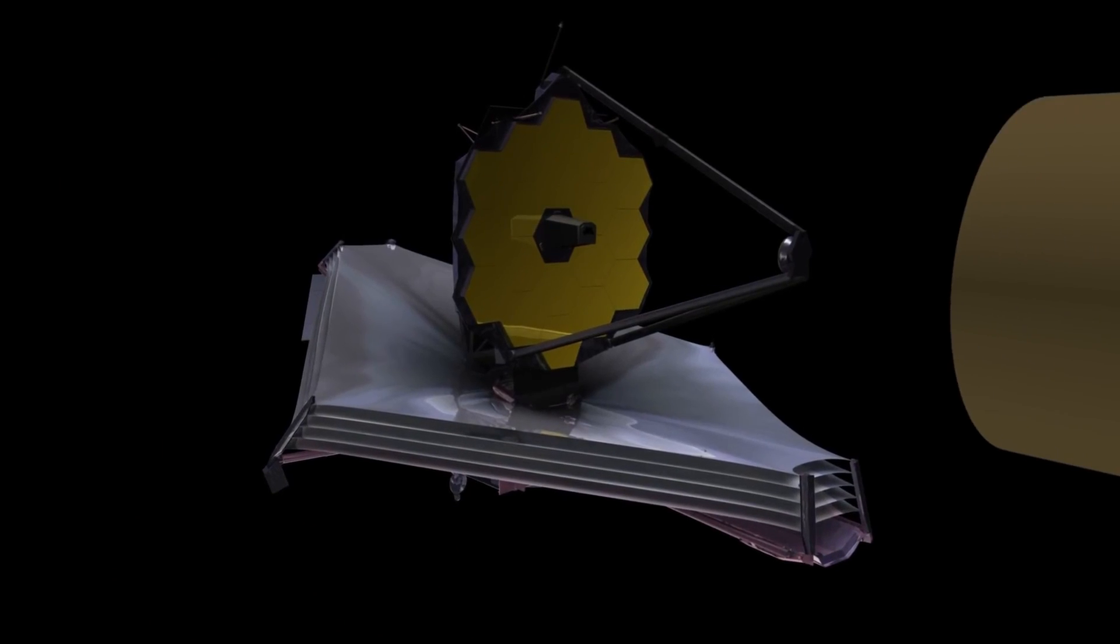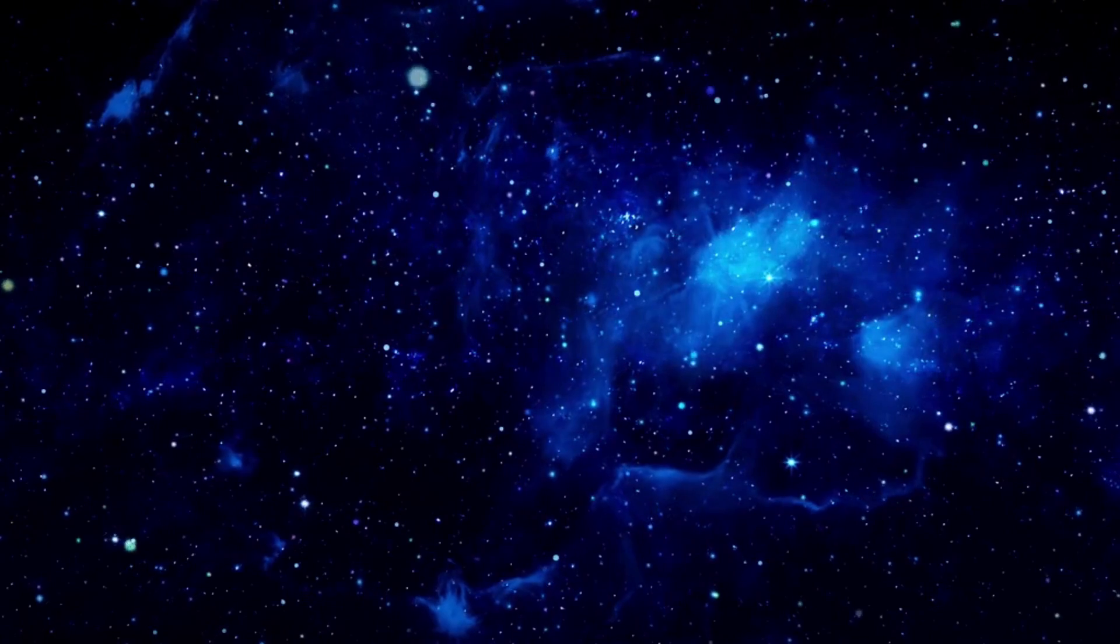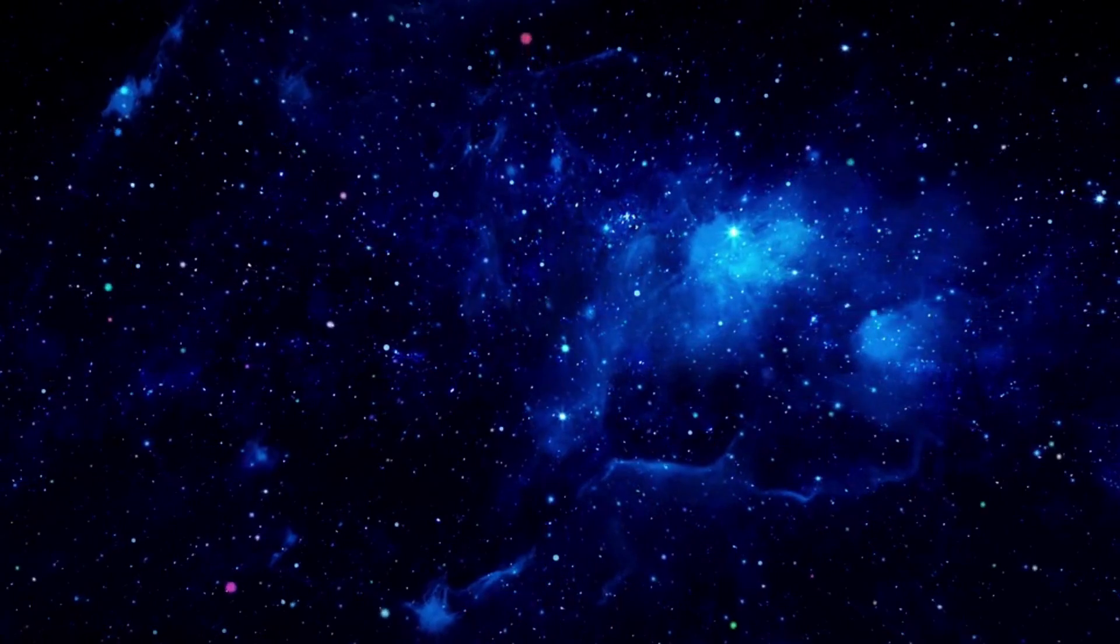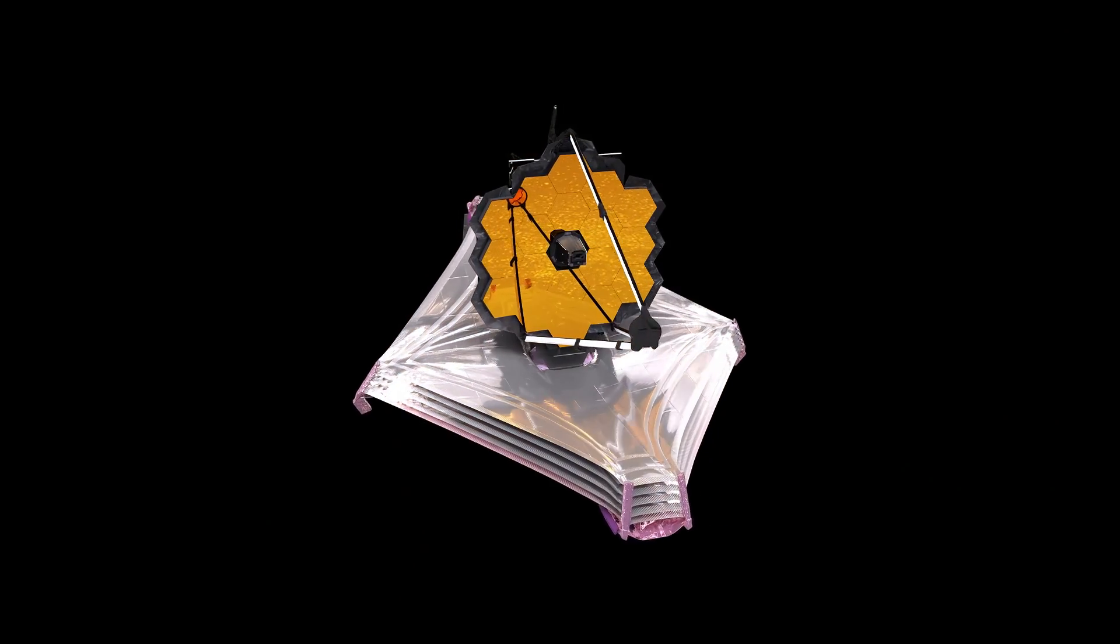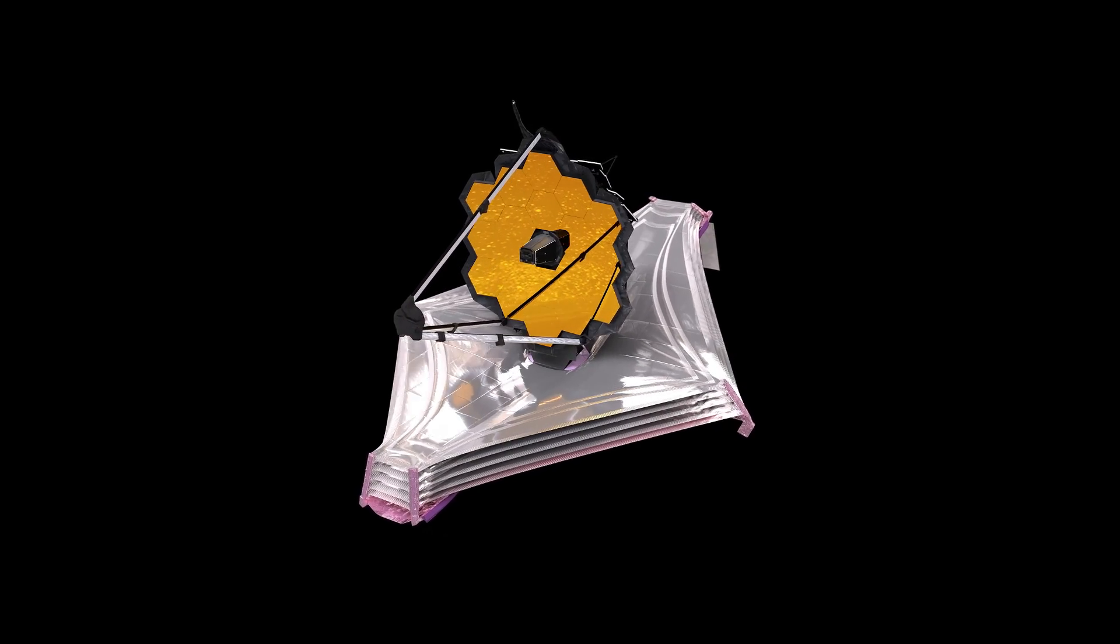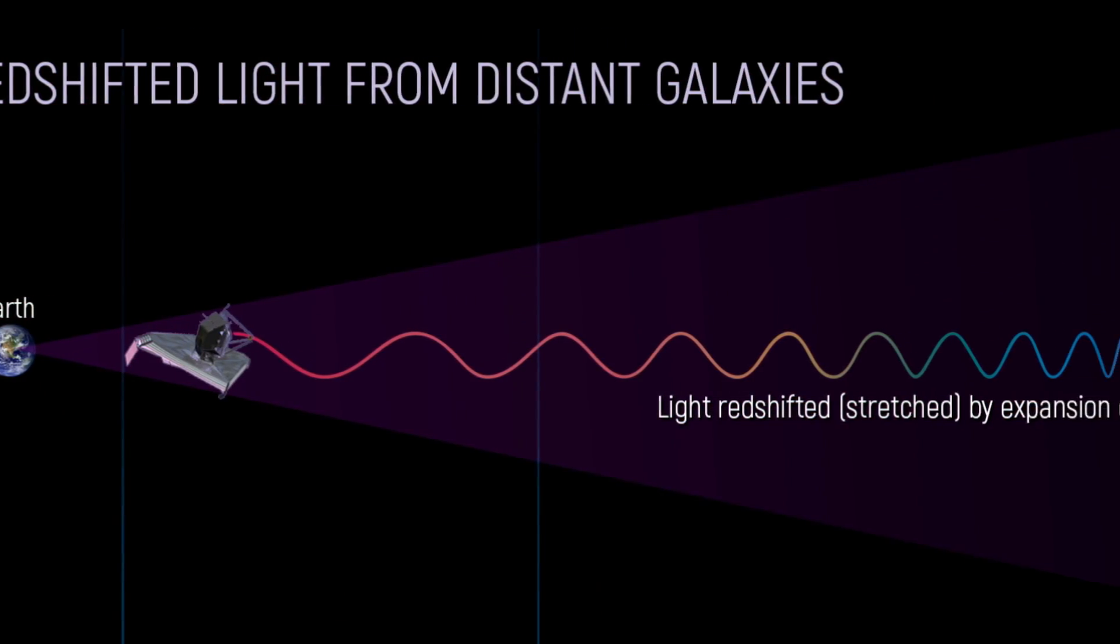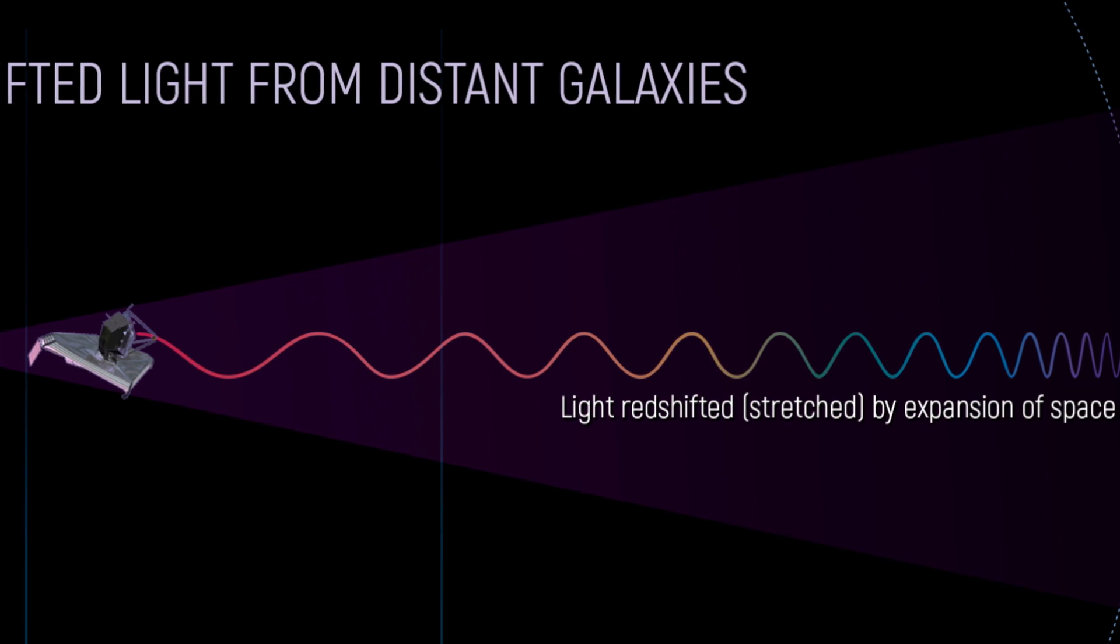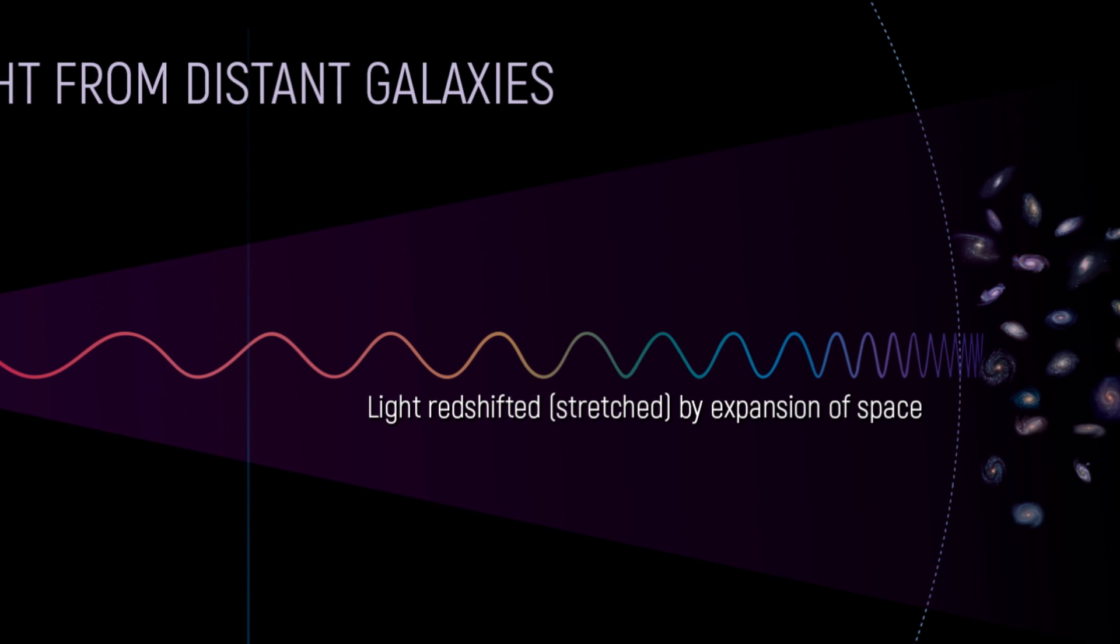The JWST operates in the infrared spectrum, which allows it to peer through the dust and gas that block the visible light from the earliest and farthest galaxies. It uses a technique called redshift to measure the distance and the age of the objects it observes. Redshift is the phenomenon of light stretching due to the expansion of the universe. The higher the redshift, the farther and older the object is.